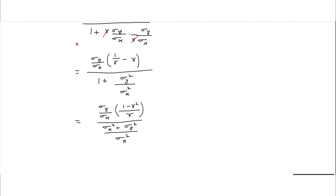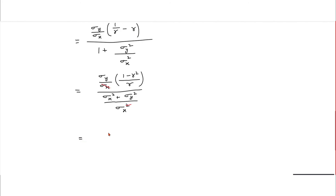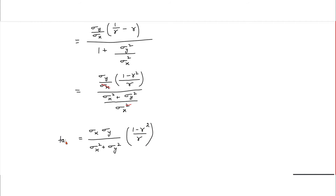Further simplifying, canceling one sigma x value from numerator and denominator, we get sigma x sigma y in the numerator. The denominator is sigma x squared plus sigma y squared. So tan theta equals sigma x sigma y divided by sigma x squared plus sigma y squared, times 1 minus r squared divided by r. That is the value of tan theta — the angle between the lines of regression.